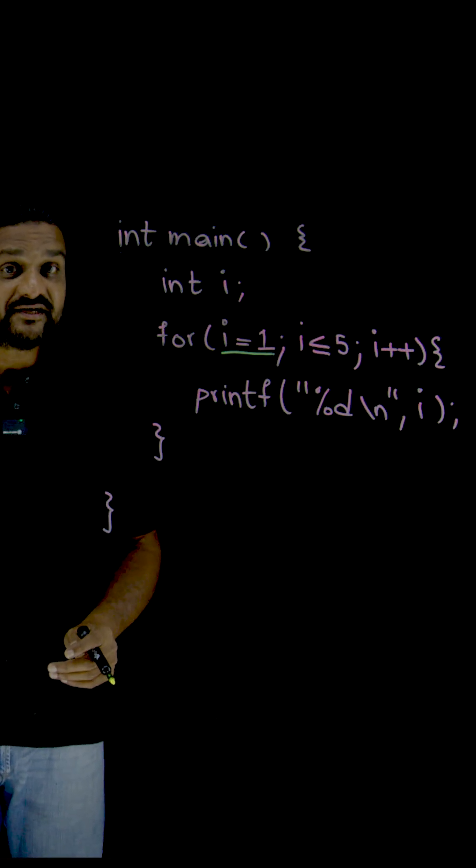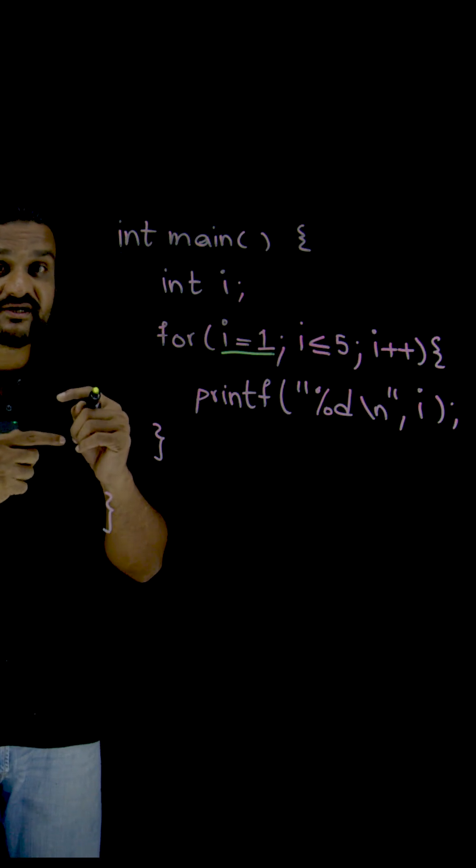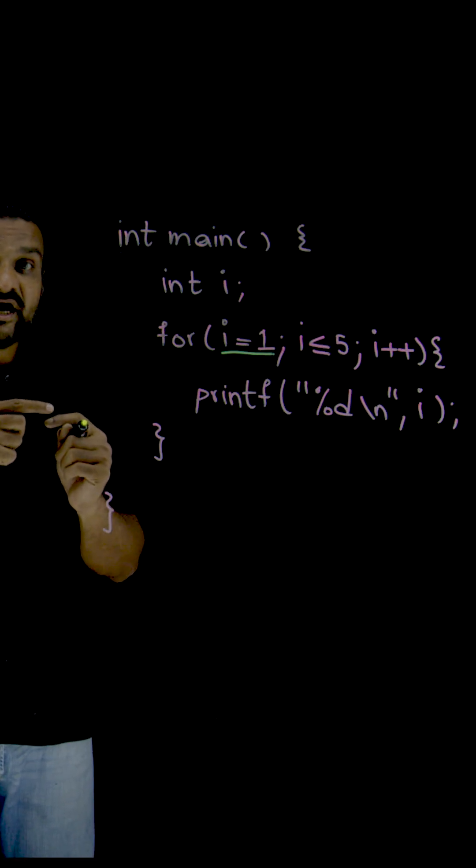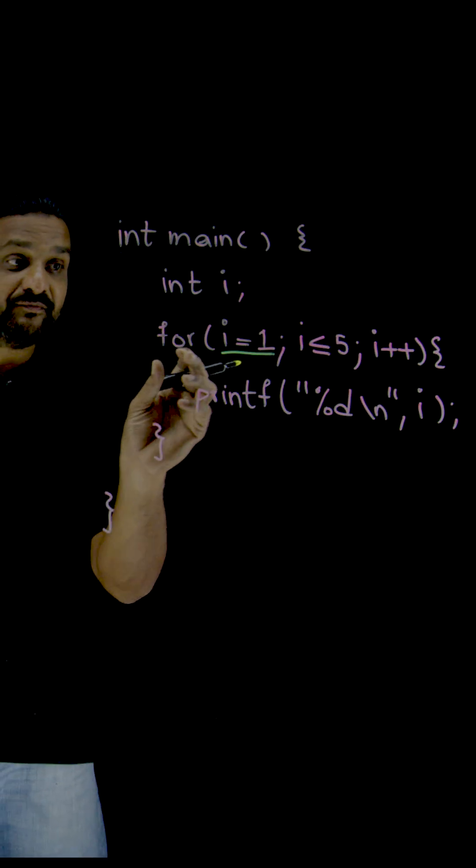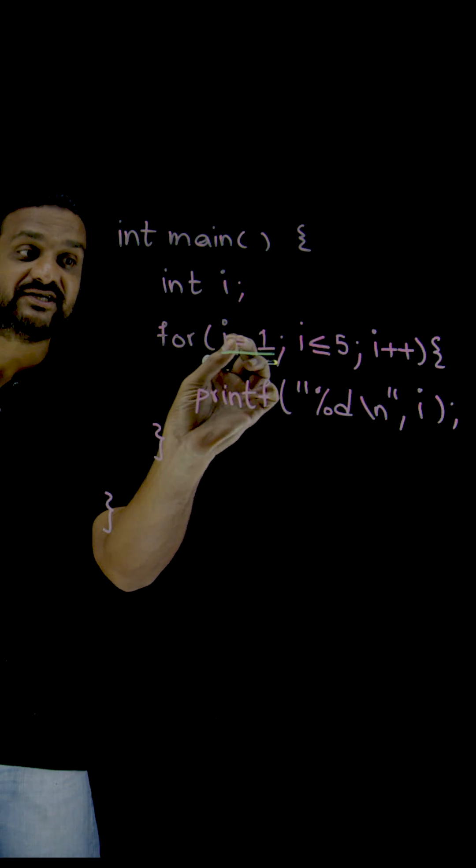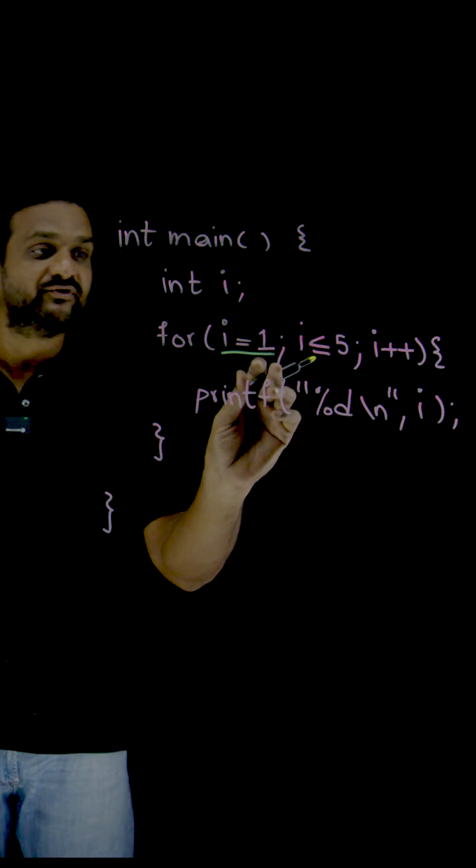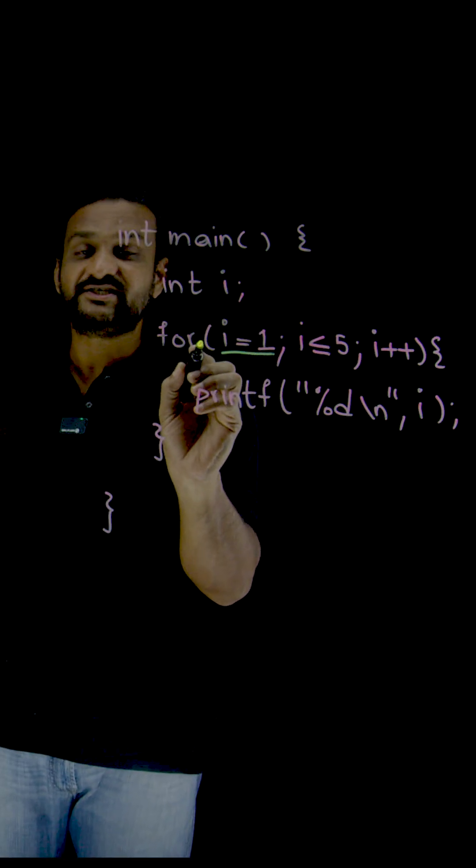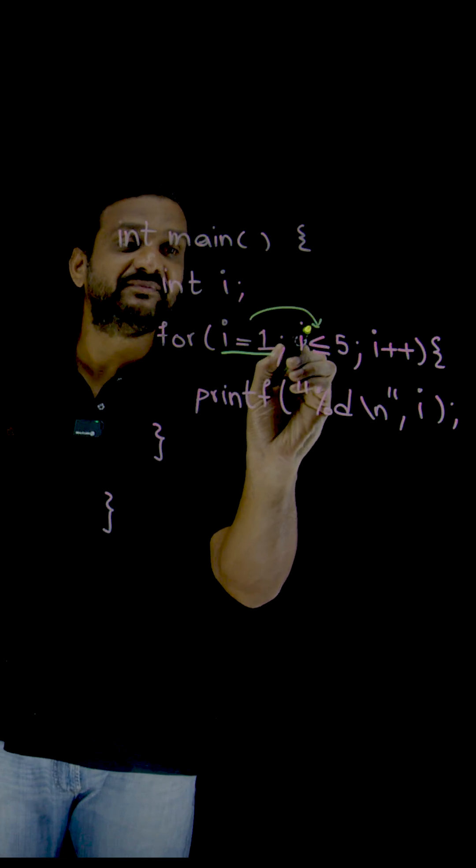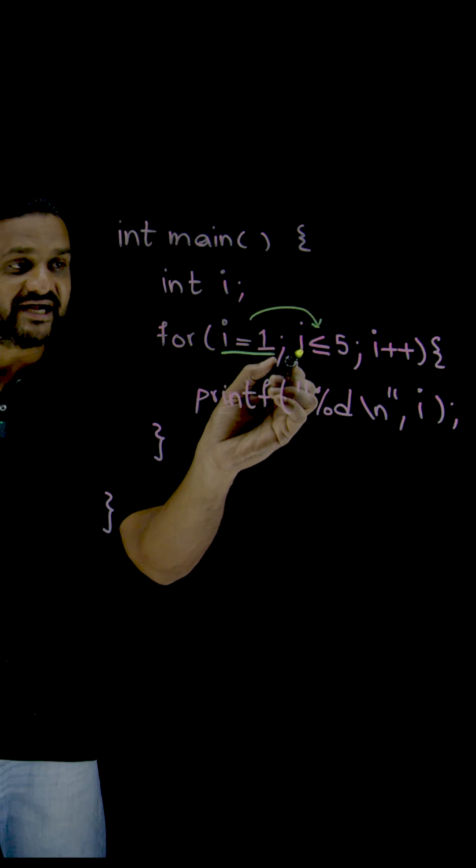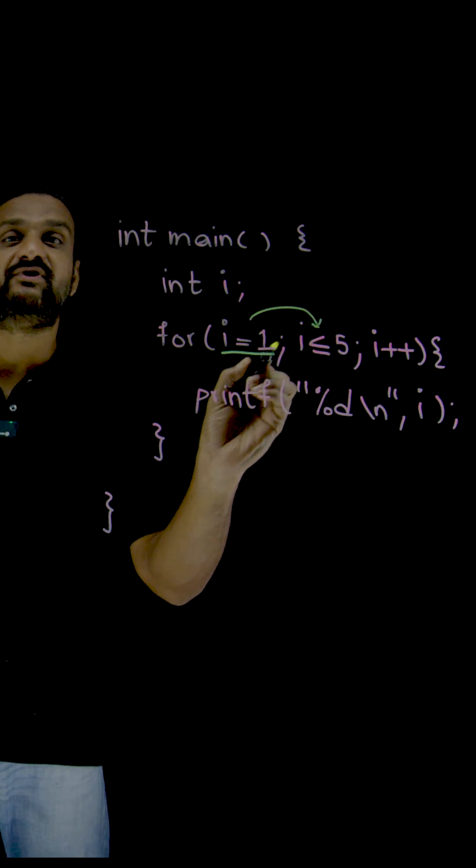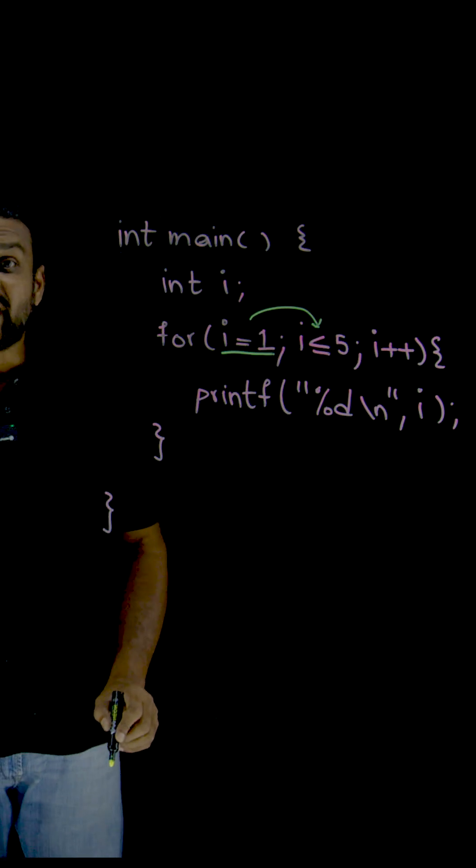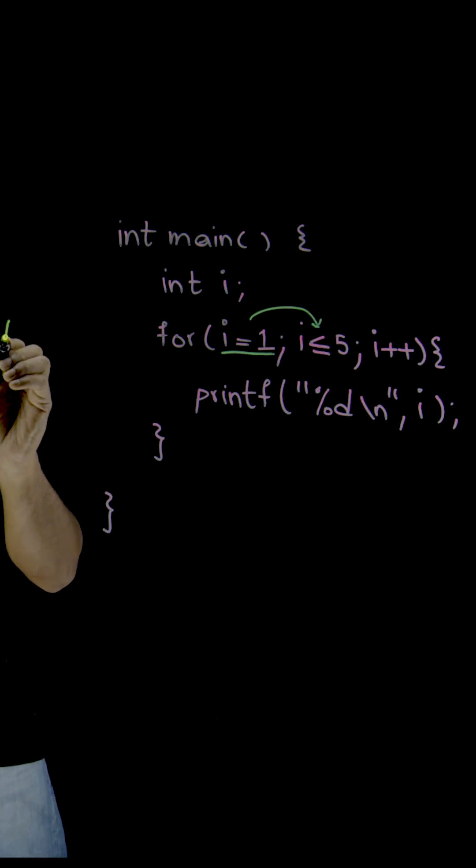Now we are starting our discussion. So our decision of making iterations again and again by this initialization i equals 1. Now once after the initialization, the condition will be checked. So what is this condition? i less than or equal to 5. What is the value of i? The value of i is 1.